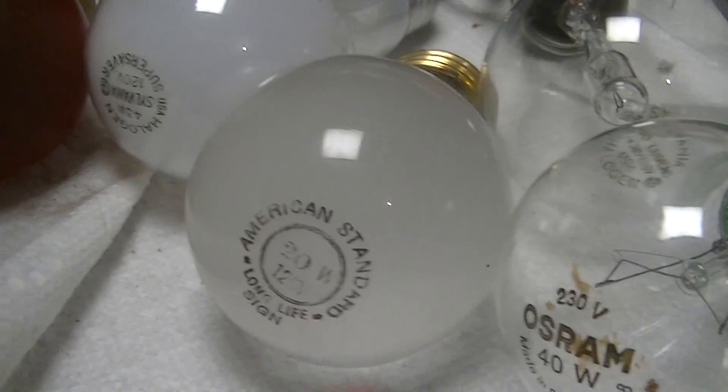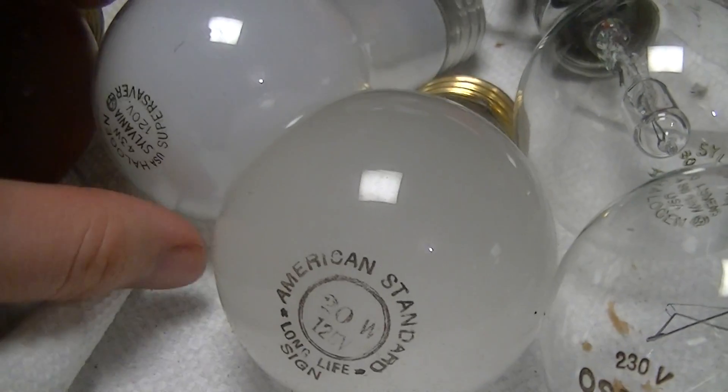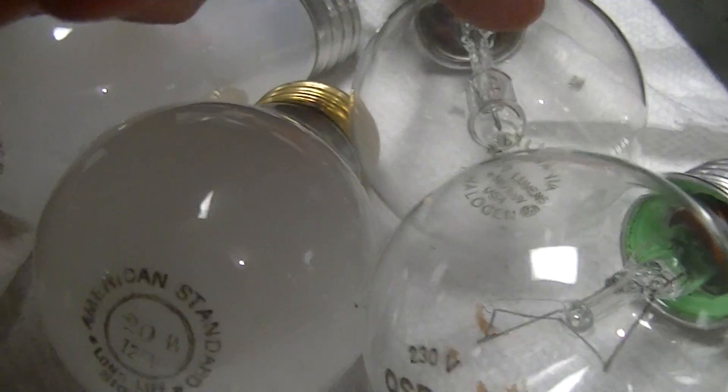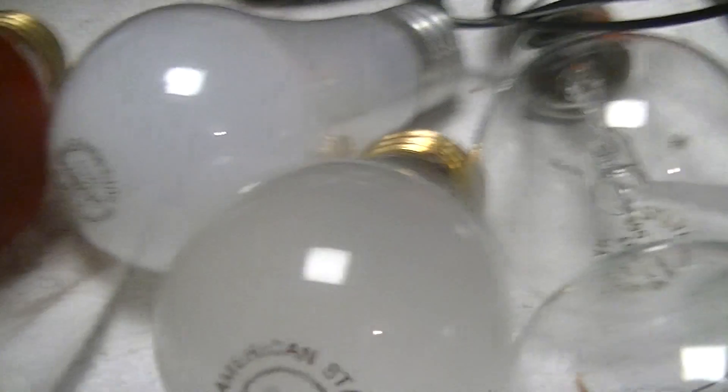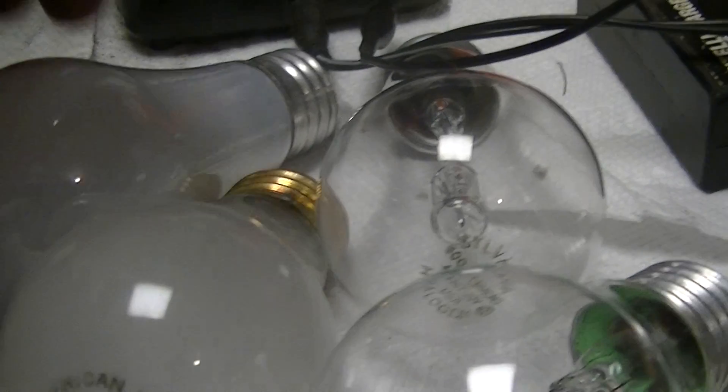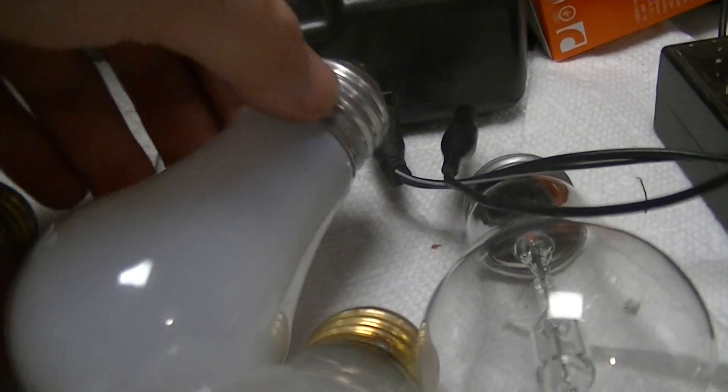These are some halogen Osram Sylvania Super Saver lamps. Those have an A17 envelope but they've got a very long base.